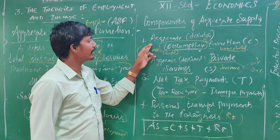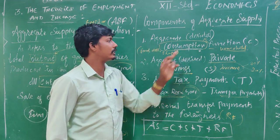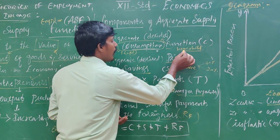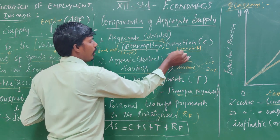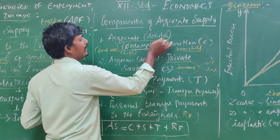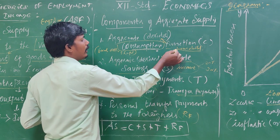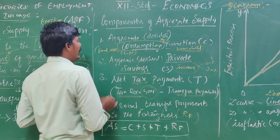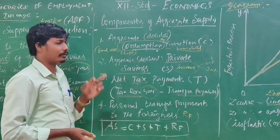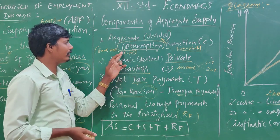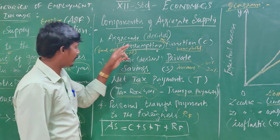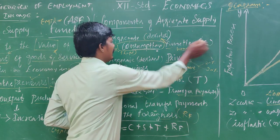The first component is the aggregate desired consumption function. The desired consumption function is what is used in the household. If the household desires something — food, cloth, shelter — they should be used in the consumption function.